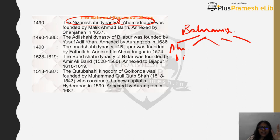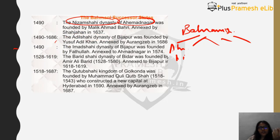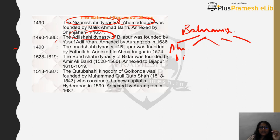There was also the Adil Shahi Dynasty of Bijapur, founded by Yusuf Adil Khan. This Adil Shahi Dynasty is important from an art and culture perspective — please tell me in the comment box what sort of architecture they introduced. The Adil Shahi Dynasty was later annexed by Aurangzeb, the son of Shah Jahan.